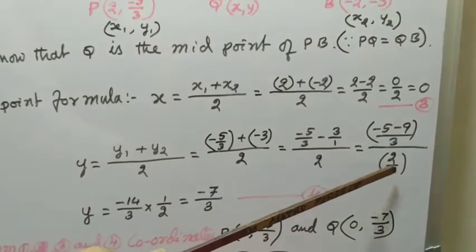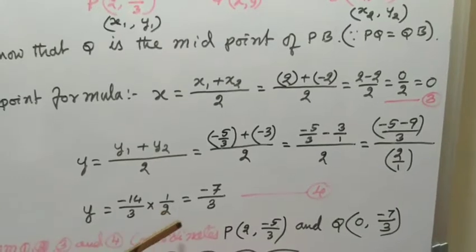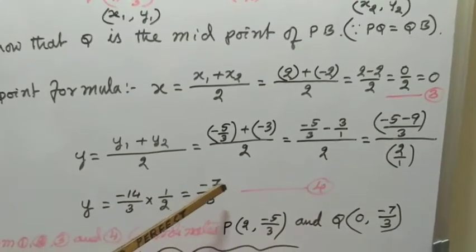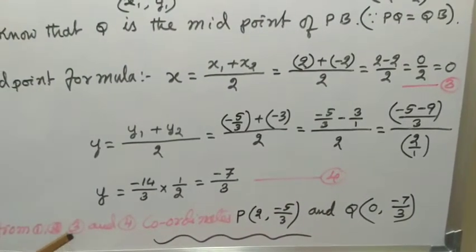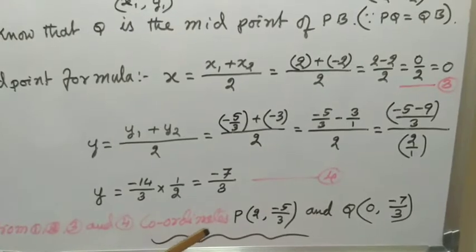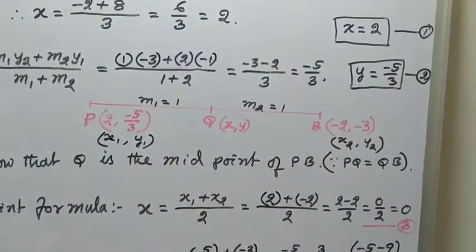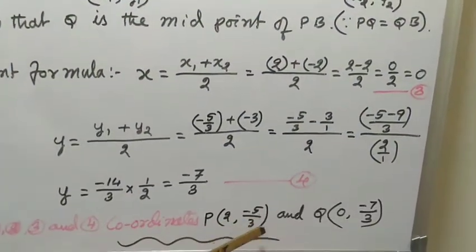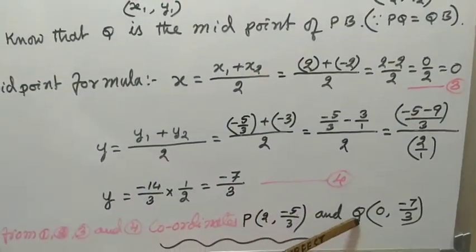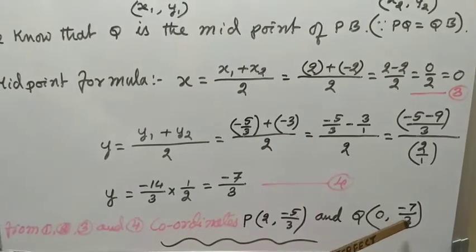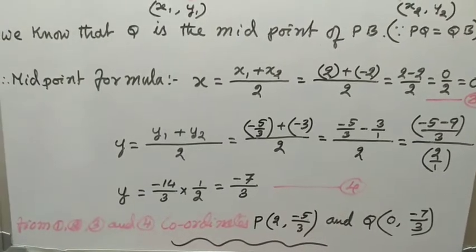And dividing by 2 can be written as multiplying by 1/2, giving minus 14/3 times 1/2 equals minus 7/3. So Y equals -7/3. Therefore from steps 1, 2, 3, and 4: coordinates of P are (2, -5/3) and coordinates of Q are (0, -7/3). In this way we can find the coordinates of trisection of AB.